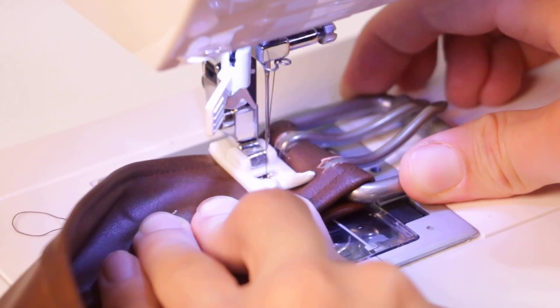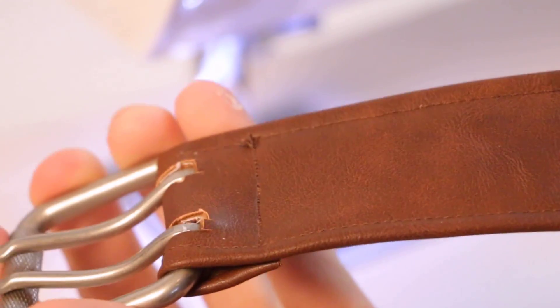Next, I sewed on a belt buckle and added a hole for the buckle to go through, and then my belt was all done.